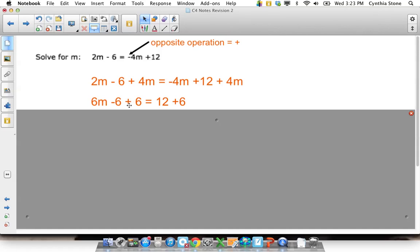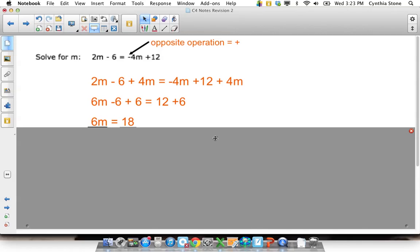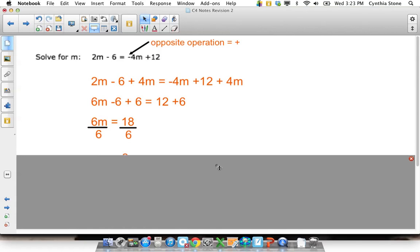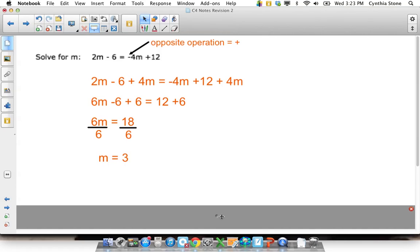Now I subtract - I have a subtract 6, so I add 6 to both sides. First I got the m's over to the left, now I get the just numbers over to the right. That leads me with 6m equals 18. Get m by itself means divide both sides by 6, and I end up with m equals 3.